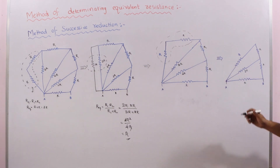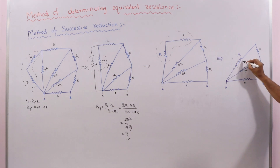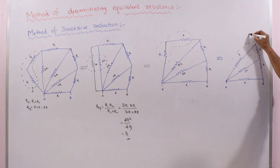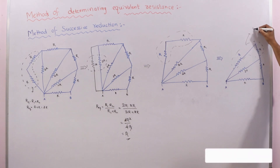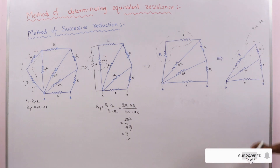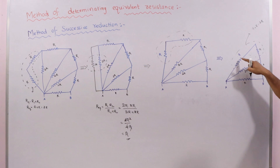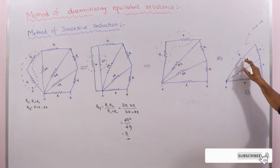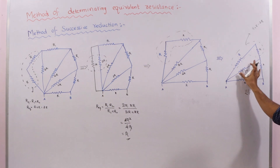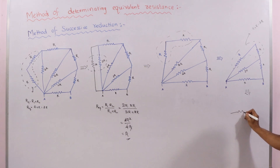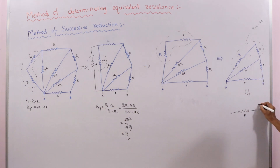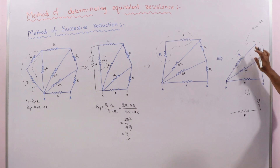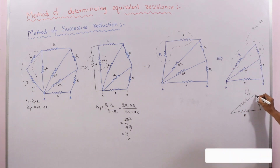Again we identify that R and R are in series combination, so their equivalent resistance is R + R = 2R. This 2R is again in parallel with 2R, giving an equivalent resistance of R. Between A and B we now have one resistor R, and combining these again gives equivalent resistance R.